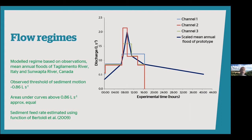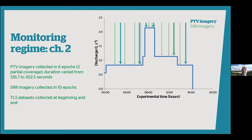We aimed to discretise the natural flood event using a step function in our pumps. The areas beneath the curves but below the 0.86 litres per second threshold are equal even though the magnitude of the events varied. The particular flow I'm going to talk about today is channel 2, which is the largest of the discretised events.